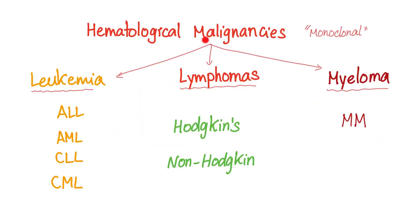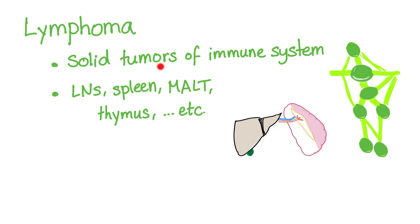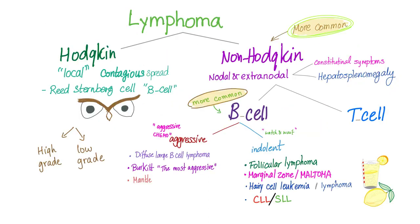The hematological malignancies are leukemias, lymphomas, and myeloma. Lymphoma is a solid tumor of the immune system — not only the lymph node, but also the spleen, mucosa-associated lymphatic tissue, thymus, etc. Lymphoma could be Hodgkin's or non-Hodgkin's, which is more common. Follicular lymphoma is a non-Hodgkin's lymphoma — specifically, an indolent B-cell non-Hodgkin's lymphoma.